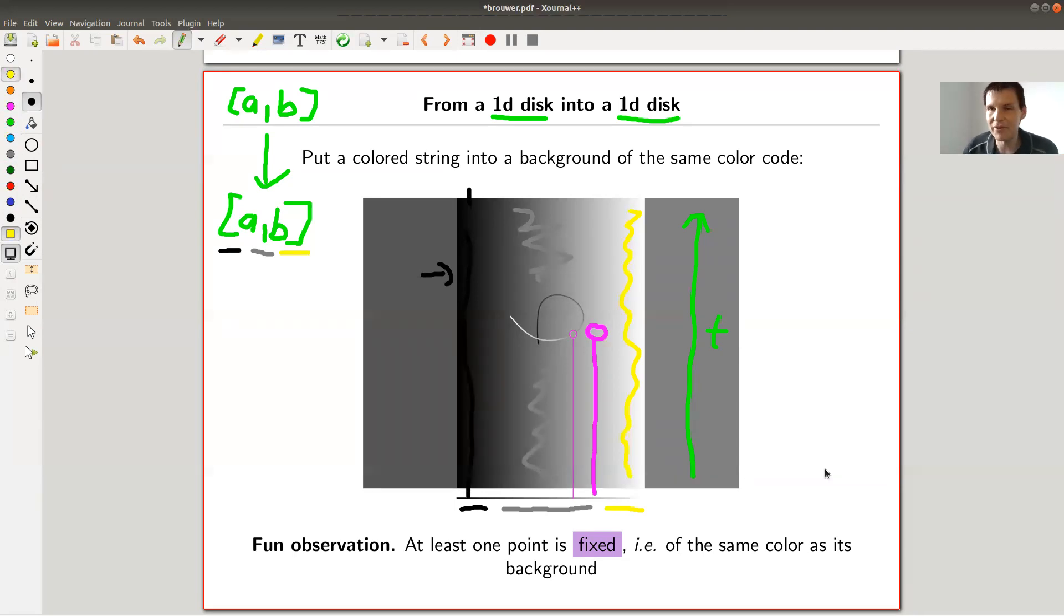And Brouwer's fixed point theorem in this case states, no matter what I do, I will always have one point of my colored line which lies on top of a point in the color background of the same color. And that's exactly the fixed point in this formulation. So let's have a look. Let's see it in motion because I have animated it.